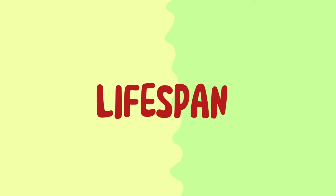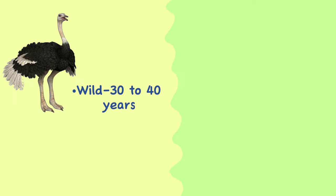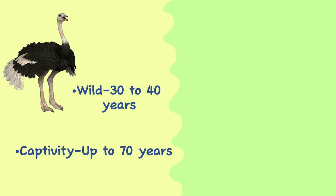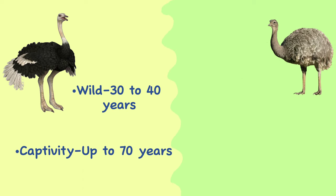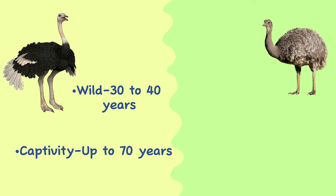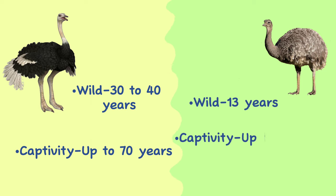Lifespan. Ostriches have a lifespan of 30 to 40 years in the wild; however, they have been known to survive to the age of 70 in captivity. In the wild, the average lifespan of a Rhea is 13 years, while in captivity it may be up to 40 years.